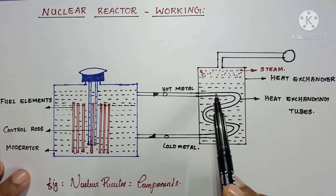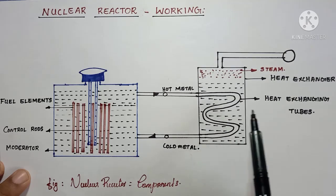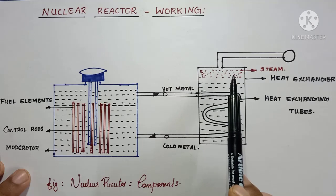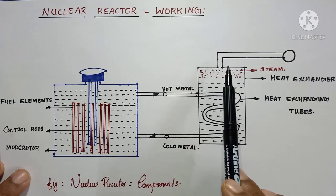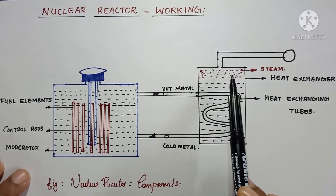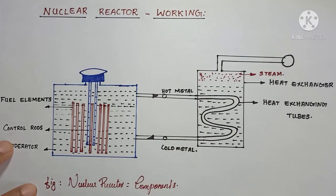At this heat exchanger, the steam will generate at the top because this hot metal will be passing through this feed water. We can collect the steam from the top of the heat exchanger and that steam will have high temperature and high pressure. This high temperature and high pressured steam will directly pass to the steam valve and finally to the turbine, and from the alternator we will get electrical energy.